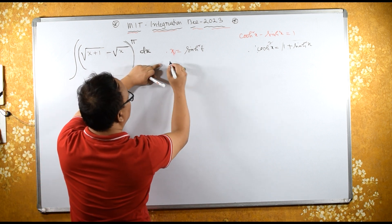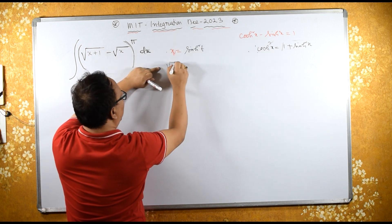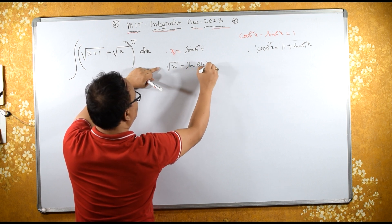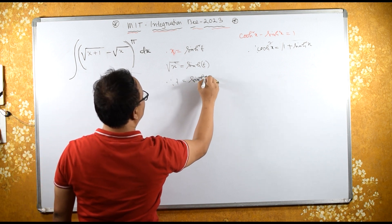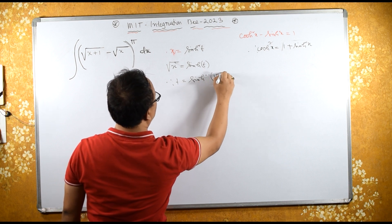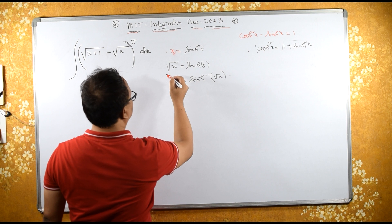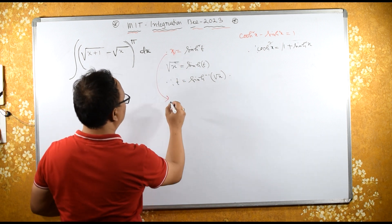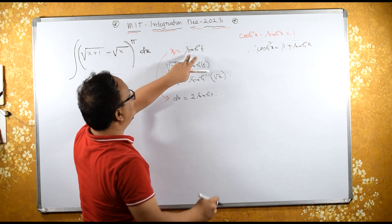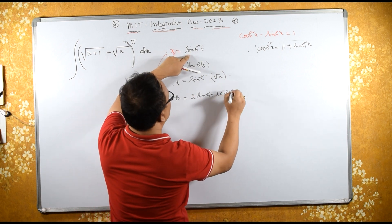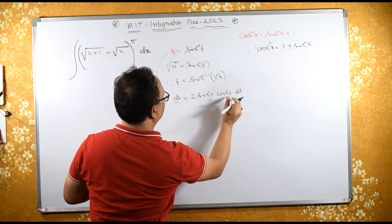From here, what is t? Taking square root on both sides, if I remove the square root, x equals sinh t. Therefore t equals sinh inverse of square root of x. Now from here, what is dx? The differential dx equals 2 sinh t · cosh t · dt.